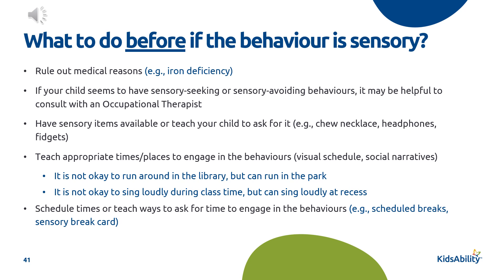When a behavior is maintained by a sensory function, it can be a little bit tricky. First, rule out medical reasons by consulting a physician. If your child seems to have sensory seeking or sensory avoiding behaviors, it might be helpful to consult with an occupational therapist. You can have sensory items available and teach your child to ask for them — like a chewing necklace or headphones if they're sensitive to sounds, or fidgets to keep their hands busy. We may teach appropriate times or places to engage in the behavior: it's not okay to run around the library, but you can run in the park. Schedule times or teach ways to ask for this time, and consider having scheduled breaks or a break card.